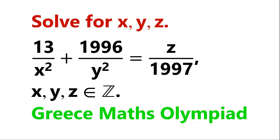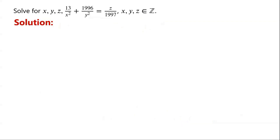Solve this equation, where x, y, and z are integers. From the equation, we can see that if x and y is a solution of the equation, then negative x, or negative y, or both negative x and negative y, are also solutions of the equation. So without loss of generality, we assume x and y are greater than zero.